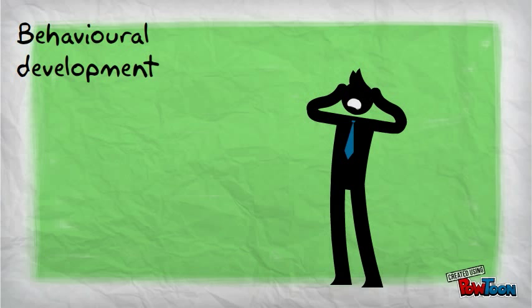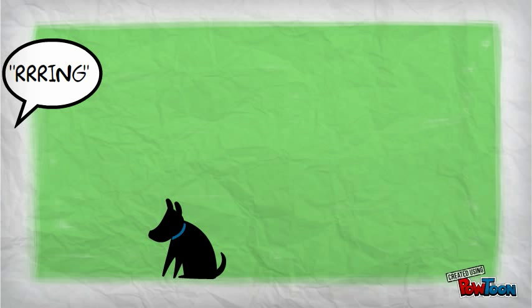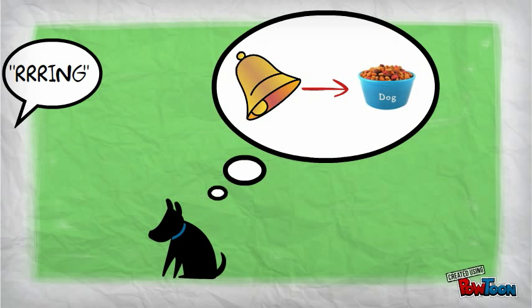He believed that a person's behavioral development is strongly affected by conditioned nervous responses to life events, like how the dog's response to the bell was created after it learned that the bell preceded food.